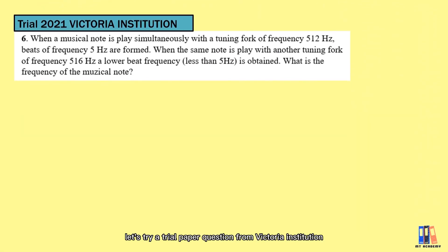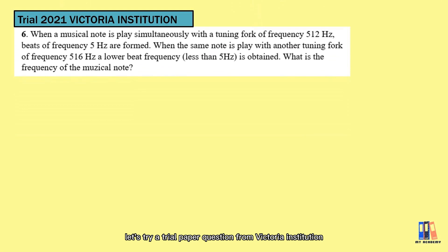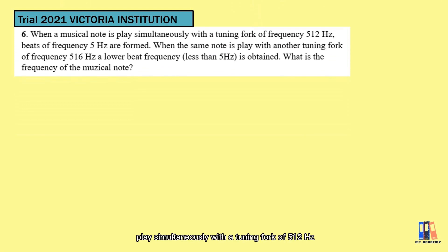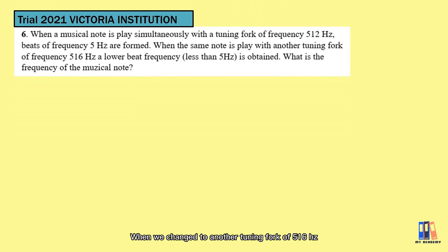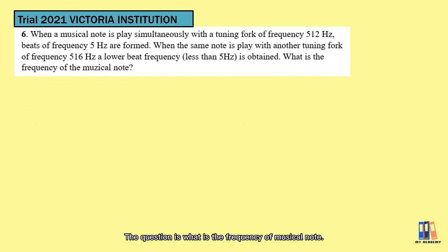Now let's try a trial paper question from Victoria Institution. We have a musical note played simultaneously with a tuning fork of 512 Hz, and a beat of frequency 5 Hz is detected. When we change to another tuning fork of 516 Hz, a lower frequency beat is detected. The question is: what is the frequency of the musical note?